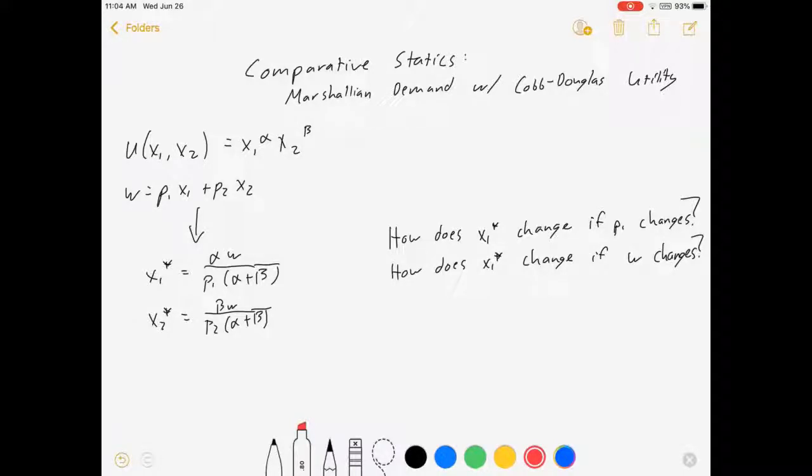In my utility maximization video with Cobb-Douglas utility, I showed you a utility function that looked like that and a budget constraint that looked like that, and at the end of the video I told you that these are your Marshallian demand functions.